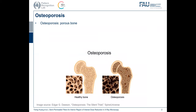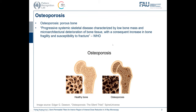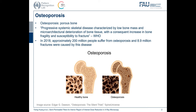This is about osteoporosis research. Osteoporosis means porous bone. It is a progressive systematic skeletal disease characterized by low bone mass and microarchitectural deterioration of bone tissue, with a consequent increase in bone fragility and susceptibility to fracture, according to the definition of WHO. In 2018, approximately 200 million people suffered from osteoporosis and 8.9 million fractures were caused by this disease.